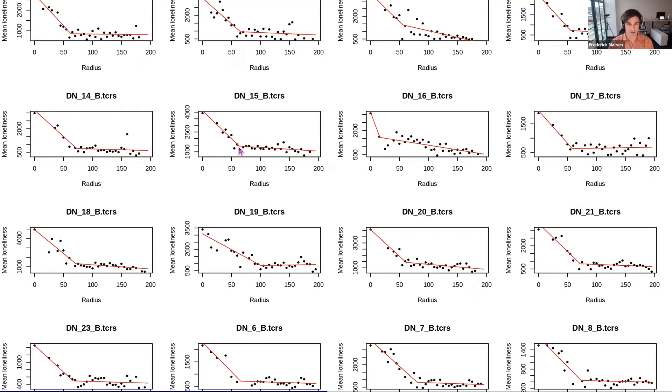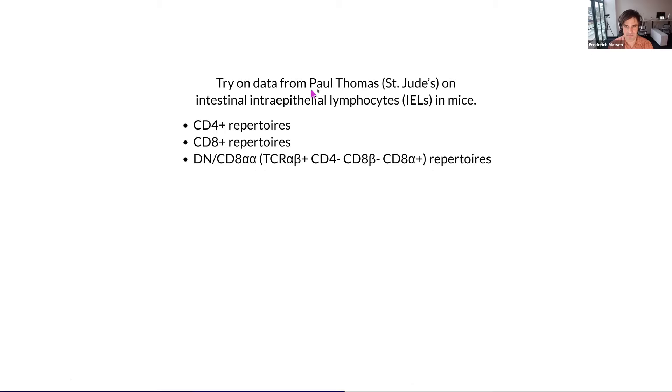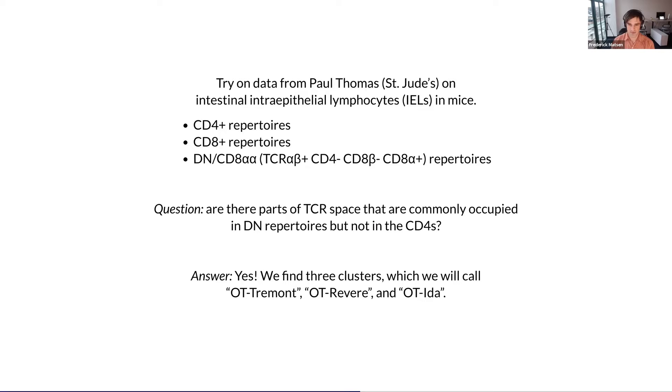Let's try this on some Paul Thomas lab data. They were interested in intestinal intraepithelial lymphocytes in mice. They have some CD4 cells, some CD8 cells, and also cells that are sometimes called double negative. I guess the correct word is CD8 alpha alpha. So these have TCRs, those don't have CD4, don't have CD8 beta, but do have CD8 alpha. These are somewhat mysterious cells, and we'd like to understand them better. The question is, are there parts of TCR space that are commonly occupied in the double negative repertoires, but not in the CD4s?